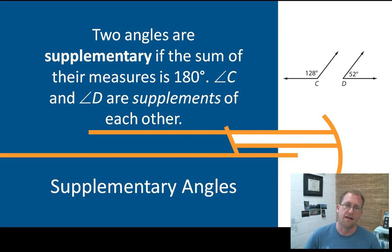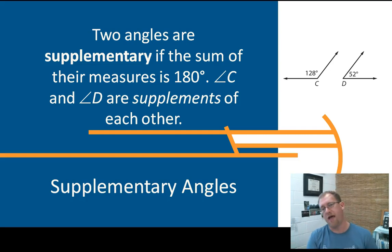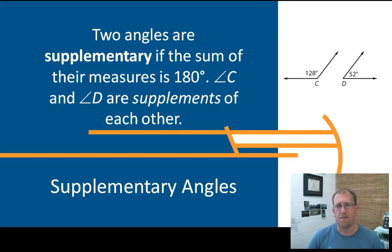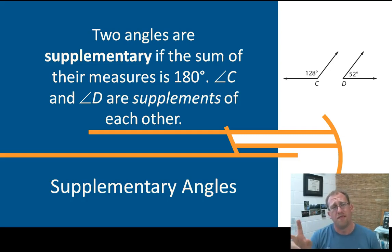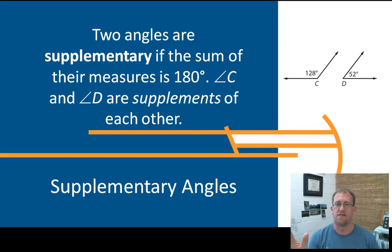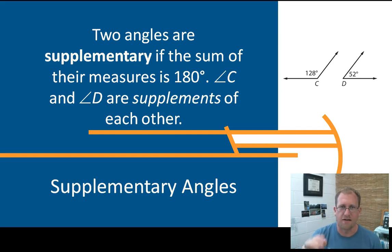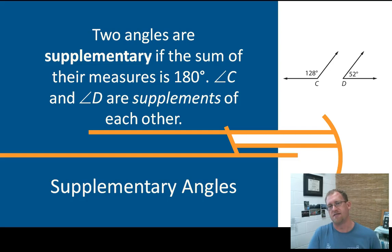That's the difference between supplementary and linear pair. I often, when I was a student, got supplementary and complementary mixed up because one of them adds up to 90 and one adds up to 180. Here's a silly little thing I finally figured out to keep them straight: I remembered that the two angles that add up to 90 are complements because 90 is smaller than 180. It's usually more complementary when you tell somebody they've gotten smaller. So: complementary is the smaller 90-degree measurement, and supplementary is the larger 180-degree measurement. Easy way to keep those two straight.